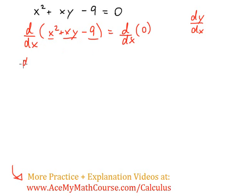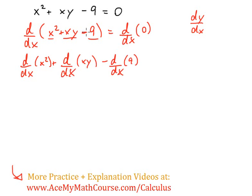So this means that we're going to differentiate every single element with respect to x. So, d/dx of x squared plus d/dx of xy minus d/dx of 9 equals d/dx of 0.